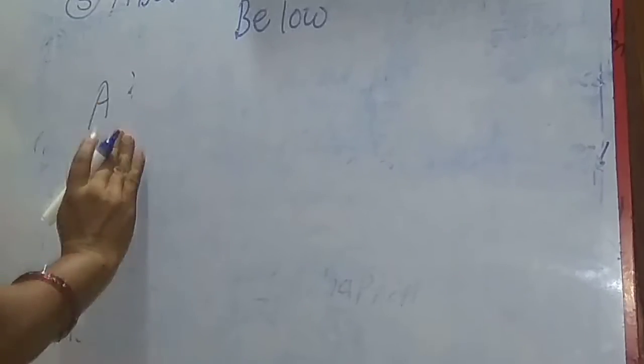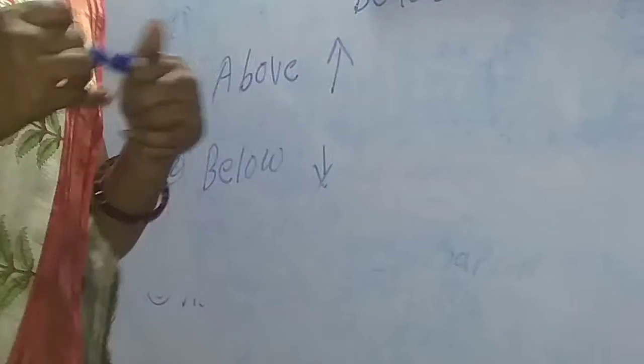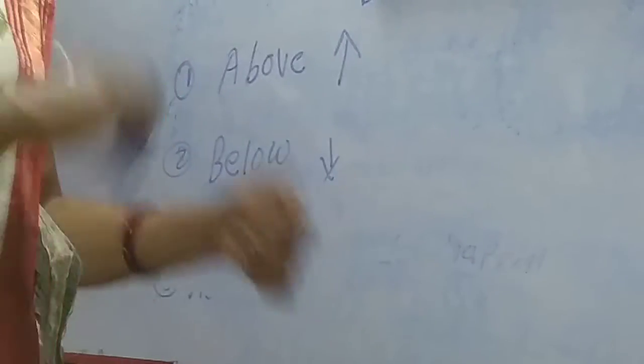A-B-O-V-E, above. How to speak? A-B-O-V-E, above. And B-E-L-O-W, below. Above means oopar, below means neche. Okay.